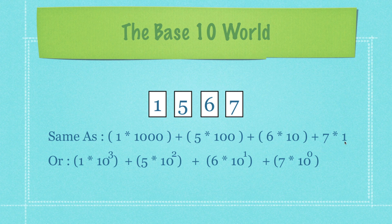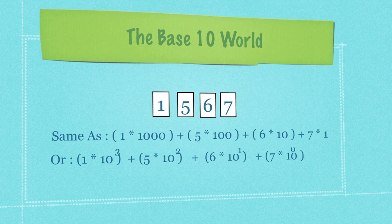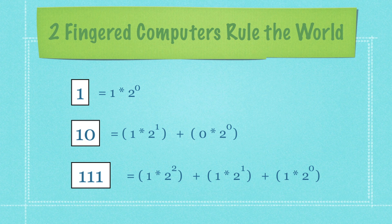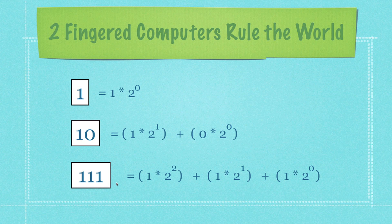If you understand that, you should also understand how all other numbering systems work. It is believed we use base 10 because we have 10 fingers. To understand computers, you must learn to understand the world as if a machine only has two fingers — or think of it as a switch with an on button or an off button. In binary we can only use 1's and 0's. How many 1's do we need? Here we need 0. How many 2's? Here we need 1. So 2 plus 0 means 10 in binary equals 2. With 1's, 2's, and 4's: 1 four plus 1 two plus 1 one equals 7, so 111 in binary equals 7 in base 10.